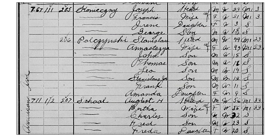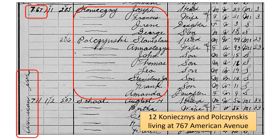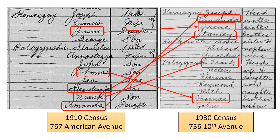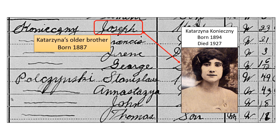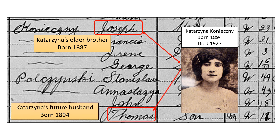Back in 1910, a total of 12 people in the Konechny-Pulchinsky clan were all living together at 767 American Avenue. Comparing 1910 and 1930 census records, we see that most of the people in the Konechny-Pulchinsky clan were still all living under the same roof, albeit a different roof. During these times, households of 12 to 14 people was not uncommon. It turns out that Joseph Konechny was Katarzyna's older brother, and Tom Pulchinsky, who is Katarzyna's future husband, was living with his future brother-in-law.